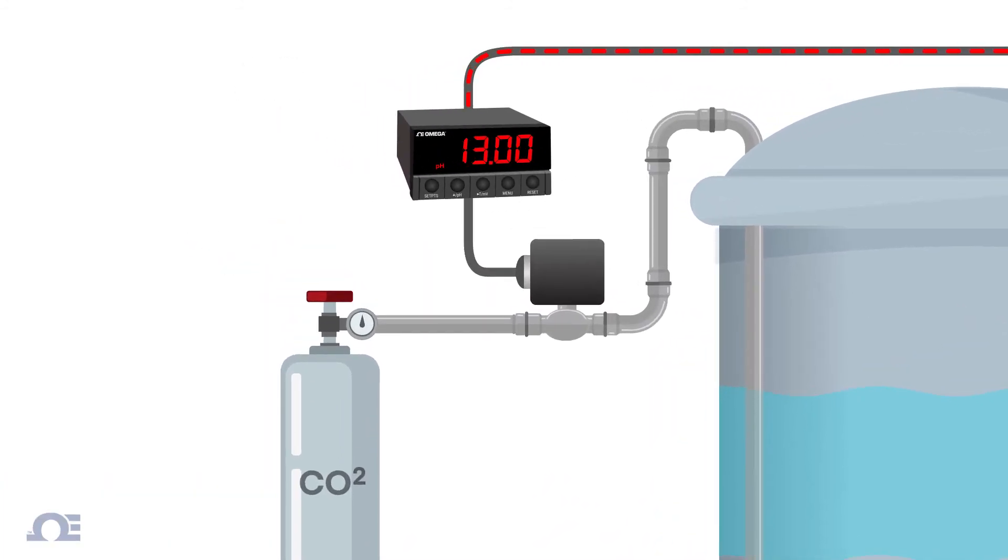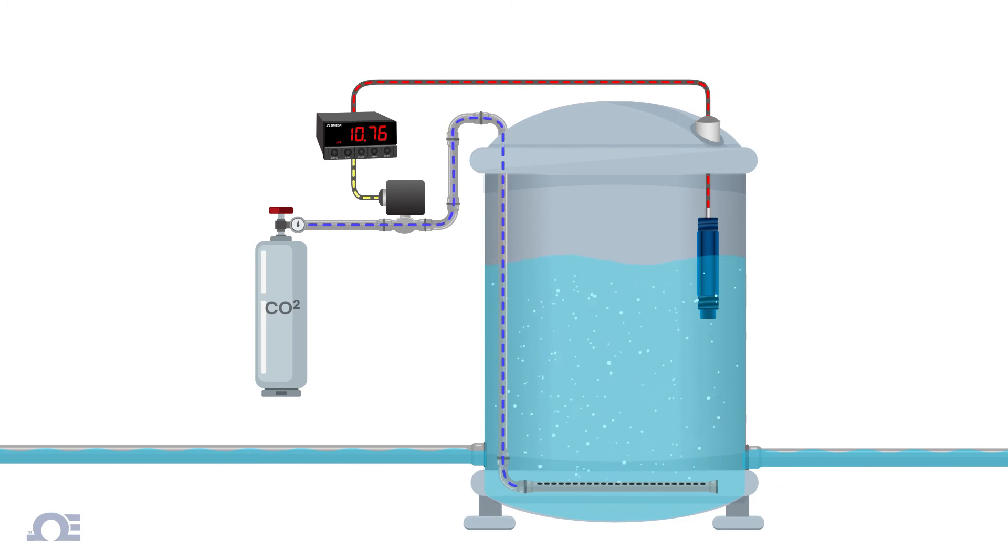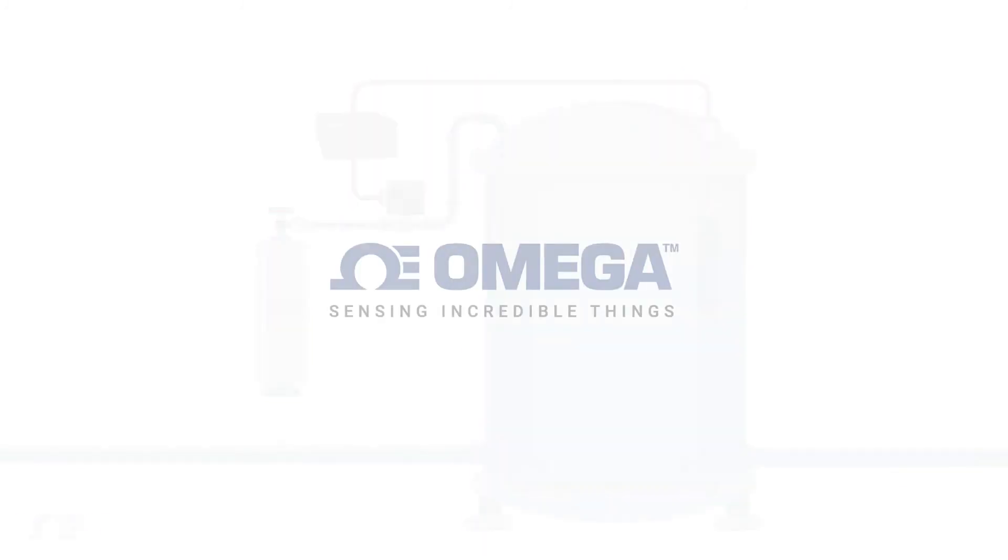If the values change, the controller sends a signal to the control valve that applies carbon dioxide to the tank to control the pH level, thus automating our pH control process.